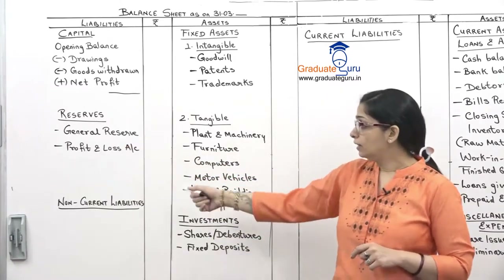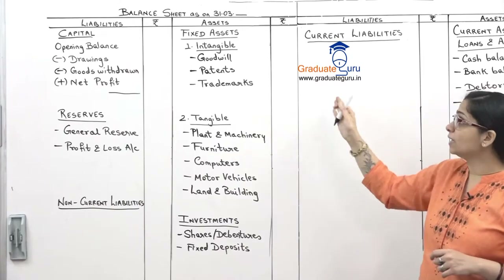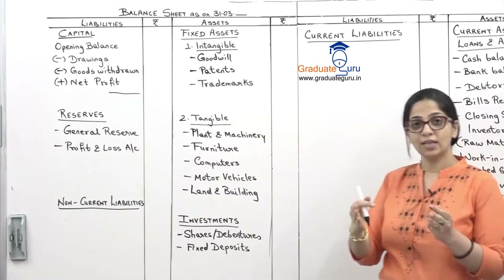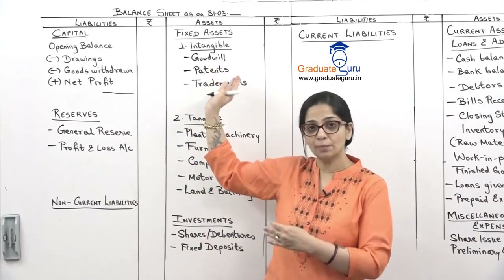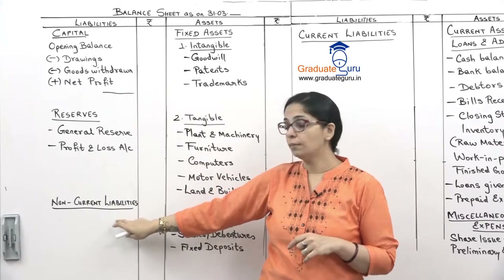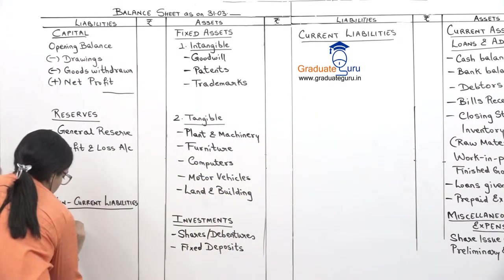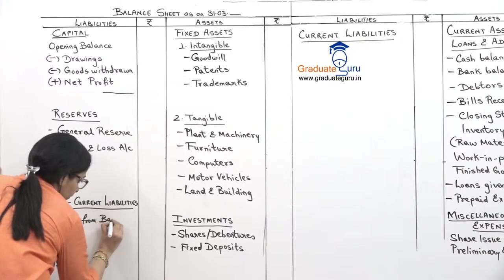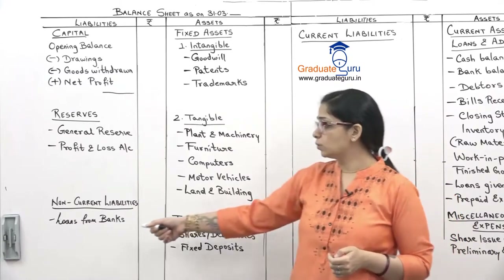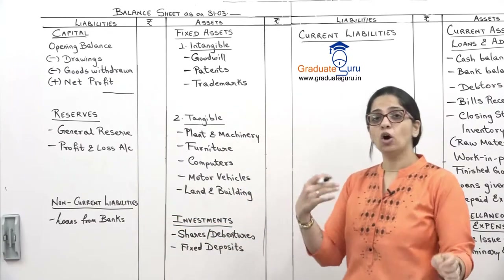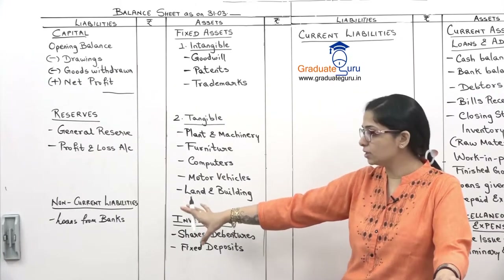Then we have non-current liabilities and current liabilities. Just as assets have fixed assets (long-term) and current assets (short-term), liabilities have non-current liabilities for long-term and current liabilities for short-term. Non-current liabilities generally include loans from banks taken for long periods — 5 years, 10 years — or any other long-term liability. Generally this section is used to show long-term loans.